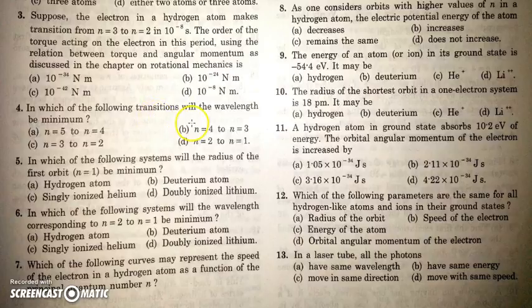In which of the following transition will the wavelength be minimum? For minimum wavelength the energy corresponding to the transition should be maximum. So for 2 to 1 the energy exchange is maximum which is nearly 10 point something out of these three other transitions. So the minimum wavelength will correspond to n equal to 2 to n equal to 1.